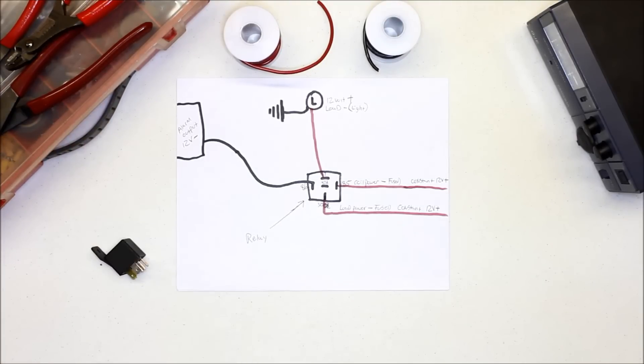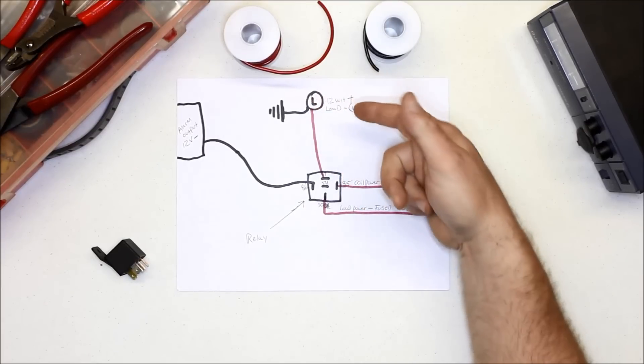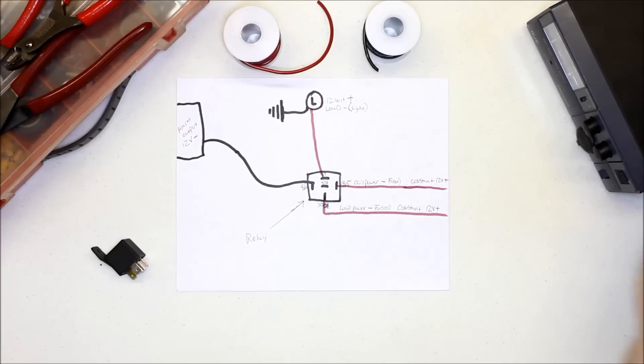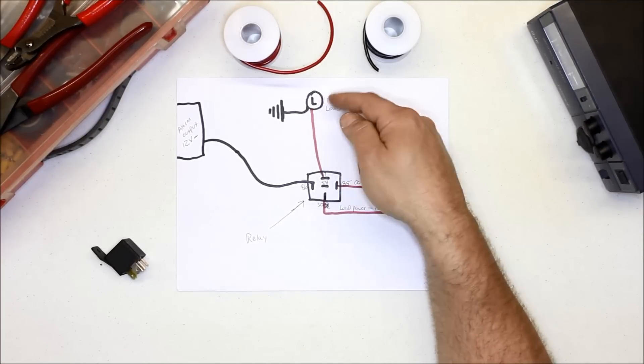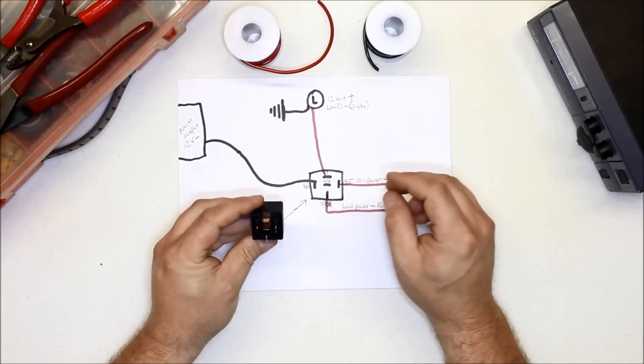Well, you do it with a relay. So this is L for load. This is the load. In our case, I'm going to show you an example using a light bulb, but it could be a trunk release or whatever it may be.